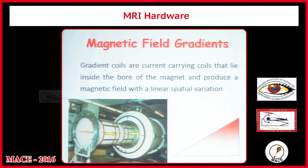When you look inside the scanner, the gradient coil is a huge one kept inside the magnet. This is the bore of the magnet and the gradient coil goes inside the magnet. In simple terms, what do you mean by gradient? Gradient means variation, slope, linear spatial variation — that is called a gradient.